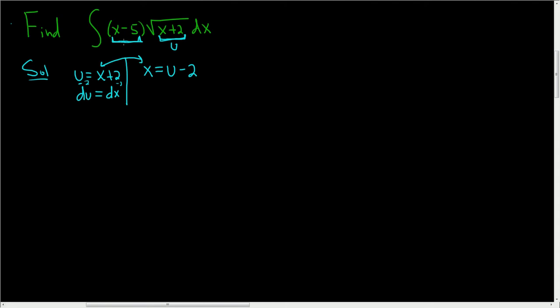Now here we have x minus 5, so if we like we can subtract 5 from both sides, and then we have x minus 5 equals u minus 7.